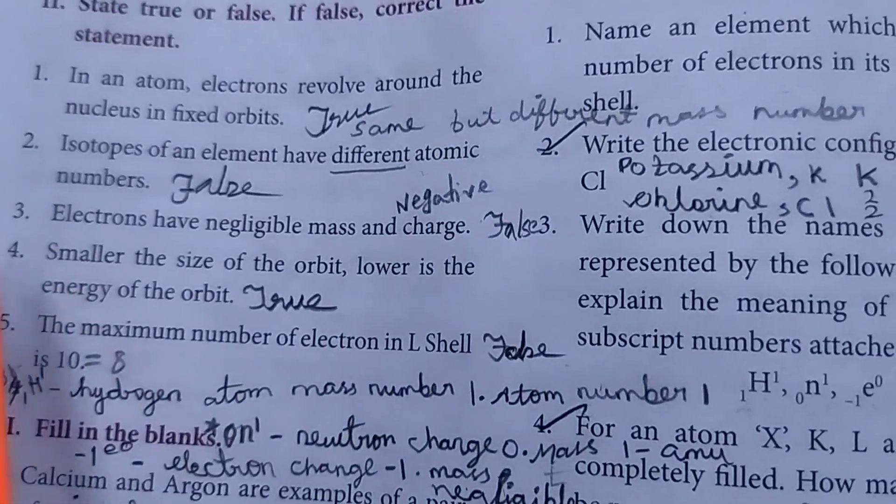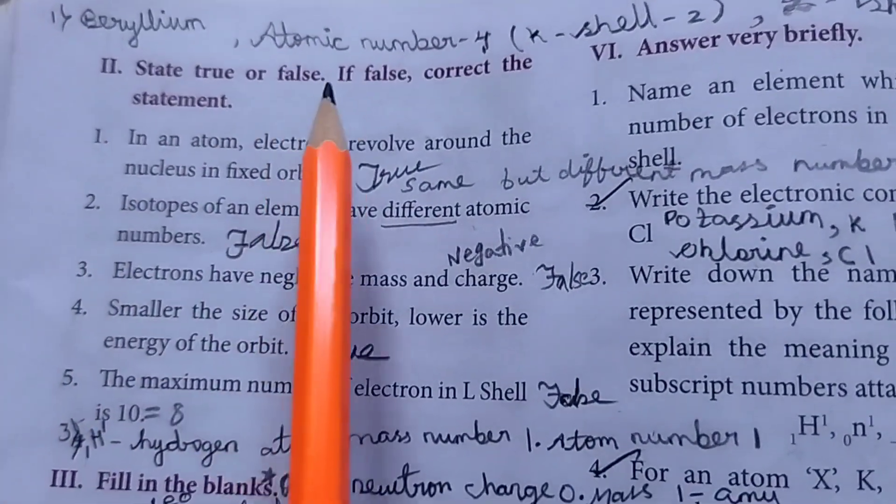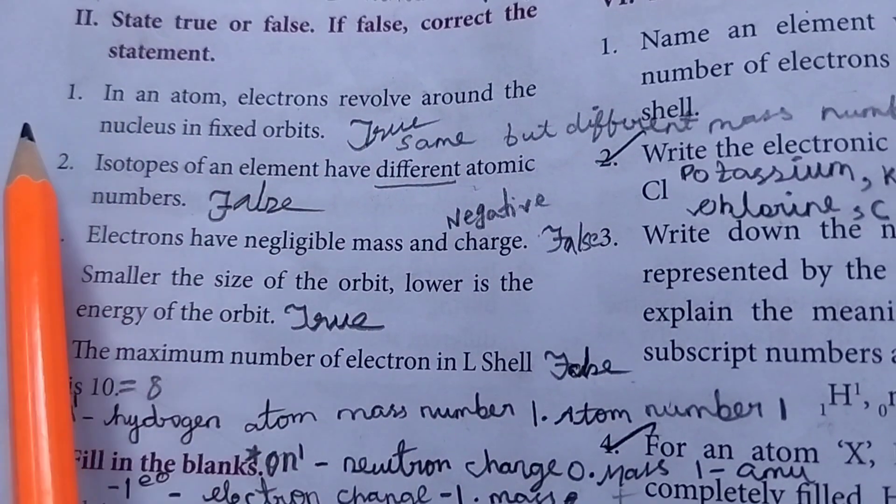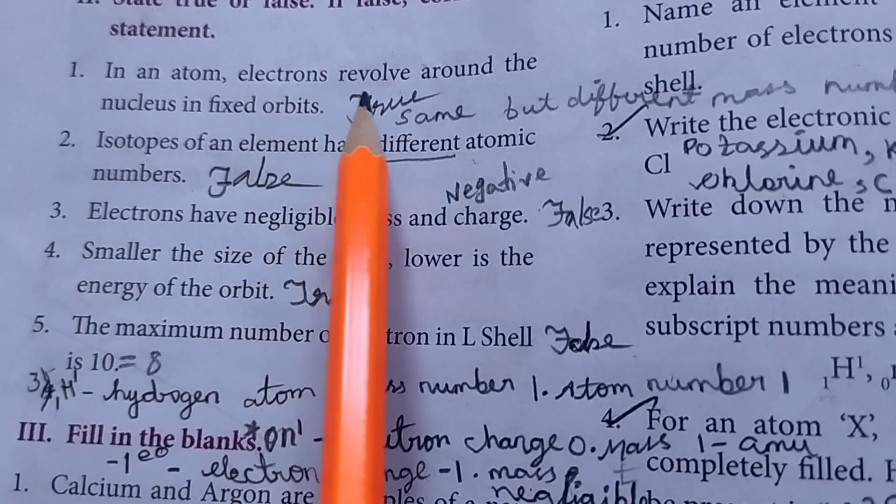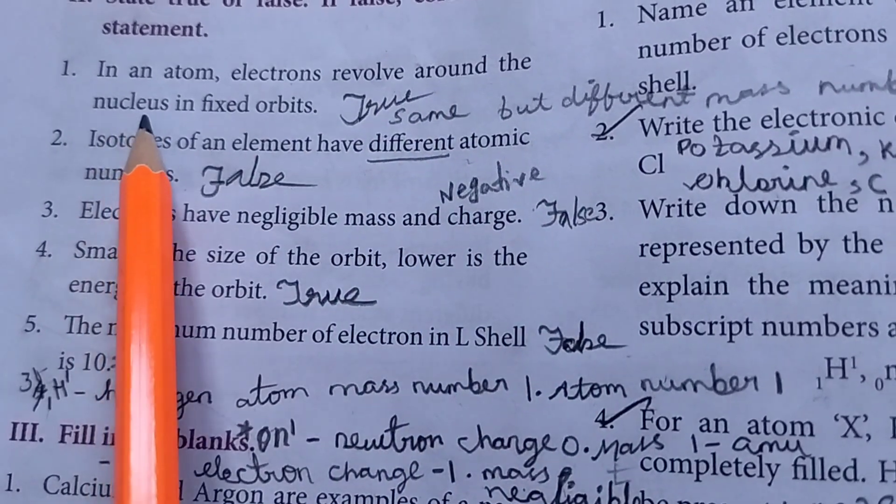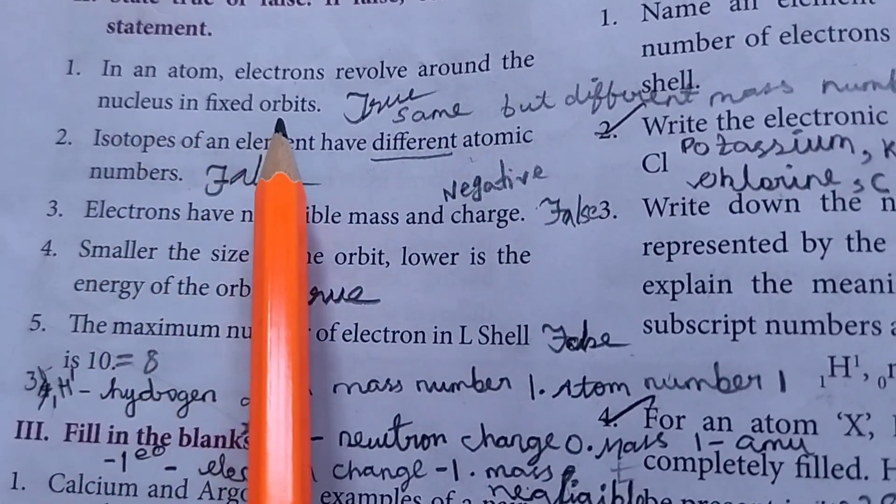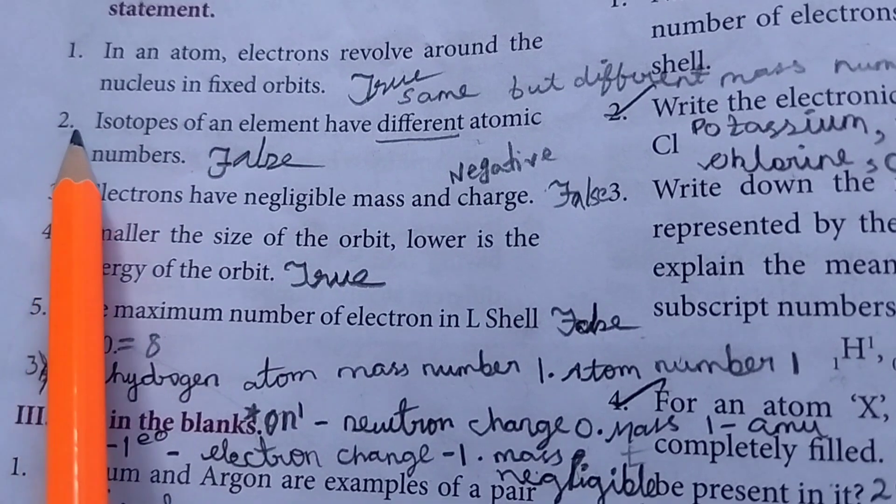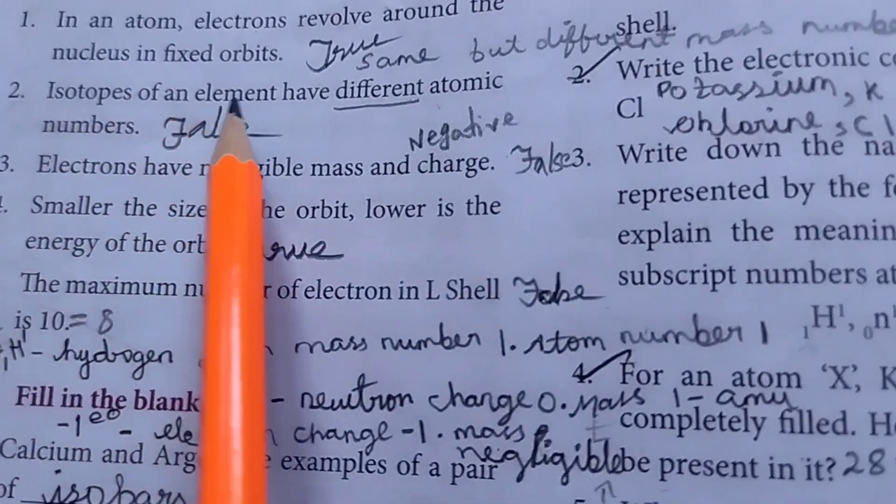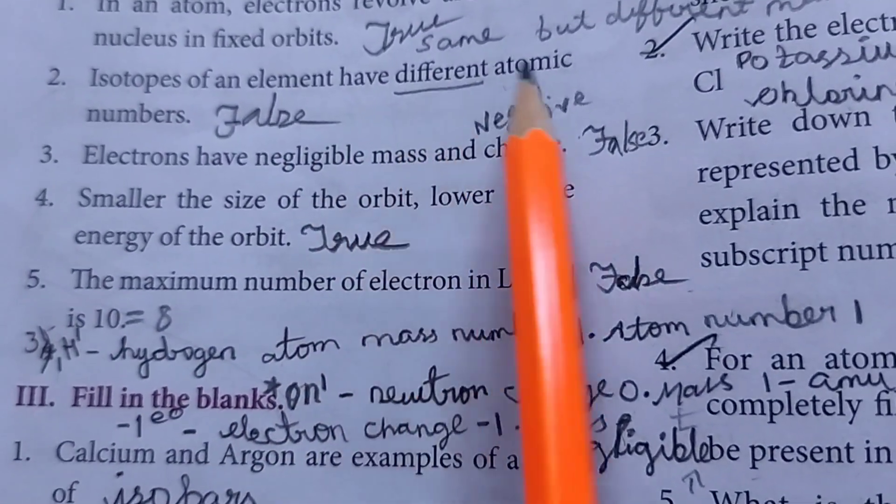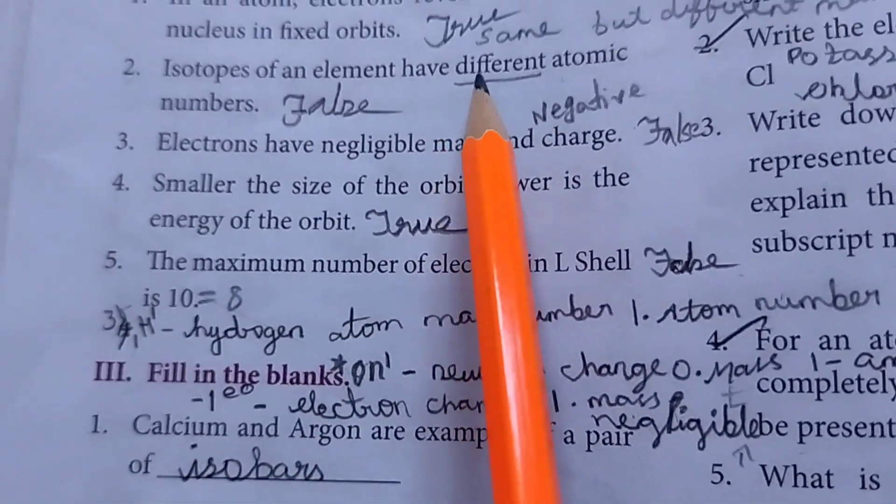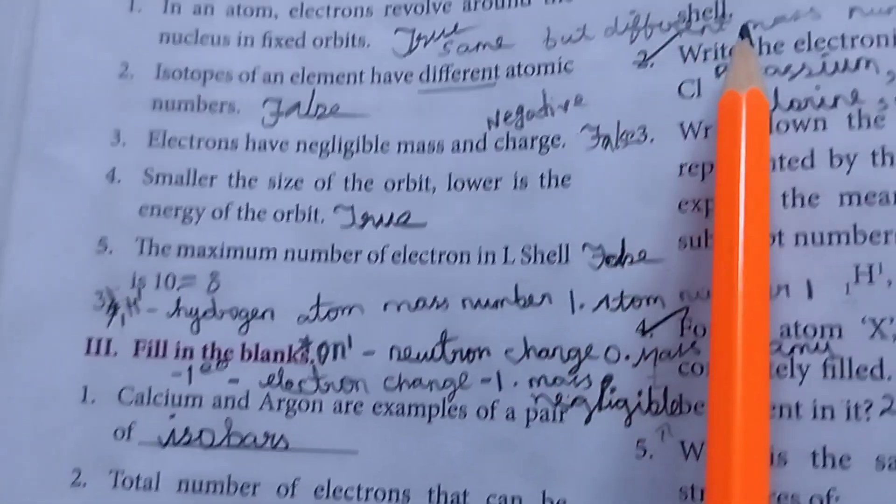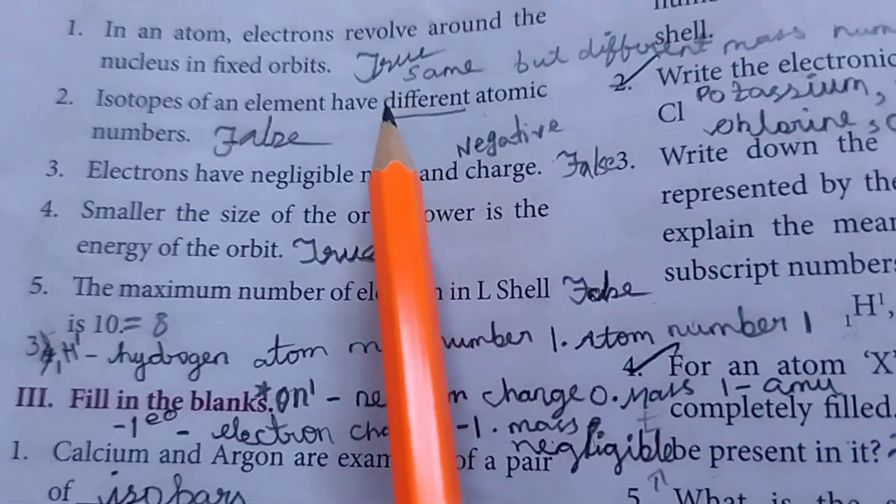Then turn next to page. State true or false if false the correct statement. First one in an atom electrons revolve around the nucleus in fixed orbits. The answer is true. Then second one isotopes of an element have different atomic numbers. The answer is false. And now given the same but different mass number. The answer is true.